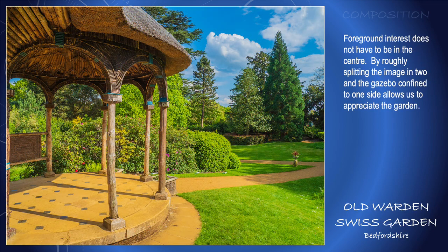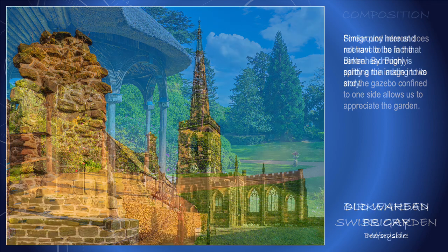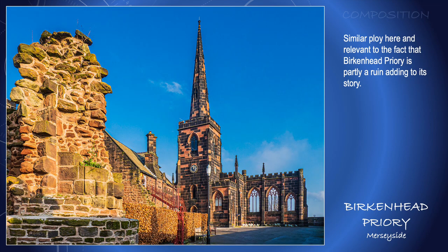Foreground interest doesn't have to be something in the centre or a diagonal going across the picture. It can be, at Swiss Garden, a building or shelter which I have occupied the left hand side of the picture, allowing you to see the garden on the right. The inclusion of that building gives the photograph depth, as does the next picture of Birkenhead Priory, where we see the ruin on the left hand side and the main intact church in the distance. The ruin on the left hand side adds depth to the image.